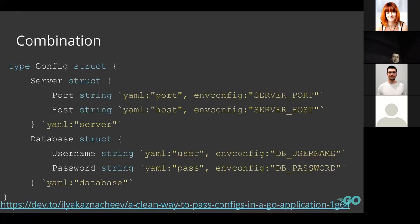There's an approach that sits between using environment variables and using files as a storage for default parameters. We may use different struct tags and different packages for parsing and setting variables into the configuration, giving a more flexible approach. As a developer you can define your own logic for how variables are treated and what has the highest priority. It looks pretty complex and may be applicable for tricky cases, but it's a nice example for the next steps.